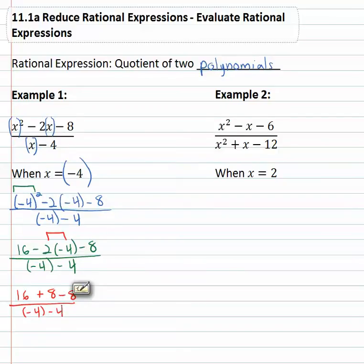And now finally at the end, we can do all the adding and subtracting in both the numerator and denominator. Working left to right, 16 plus 8 is 24 minus 8 is 16 over negative 4 minus 4 is negative 8. And we can reduce that fraction to our final answer of negative 2.